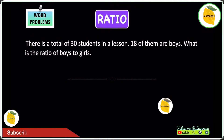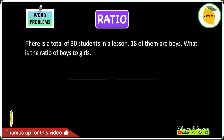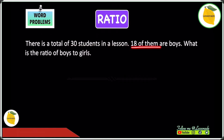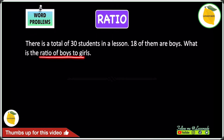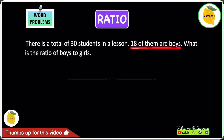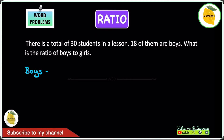Let's have a look at a ratio word problem. The question is: there is a total of 30 students in a lesson, 18 of them are boys — what is the ratio of boys to girls? For this question we need to find the ratio of boys to girls, and for that we need to find the number of boys and girls. First, we know that there are 18 boys.